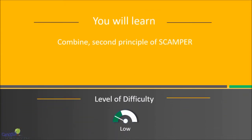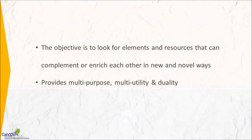In this lecture, we will talk about the second principle of SCAMPER called Combine. The objective of applying this principle is to look for elements and resources that can complement or enrich each other in new and novel ways. By doing so, we may be able to overcome the problem.